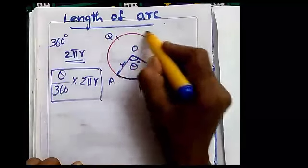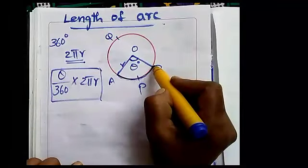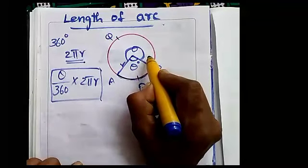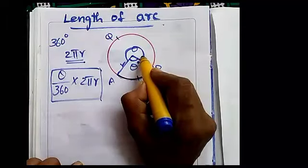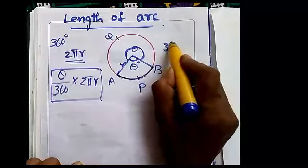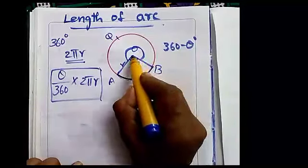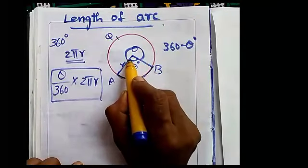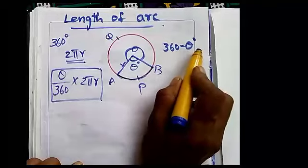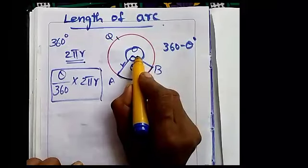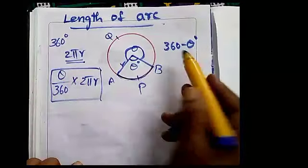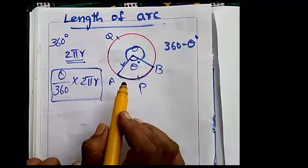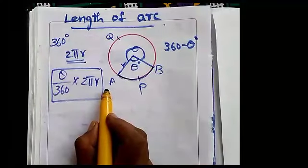If you need to find the length of the major arc, the angle for the major arc is 360 − θ degrees. So the major arc length is (360 − θ)/360 × 2πR, using the same formula.